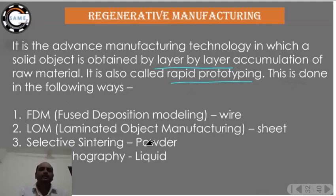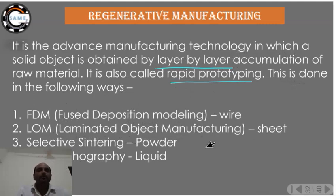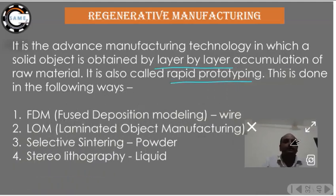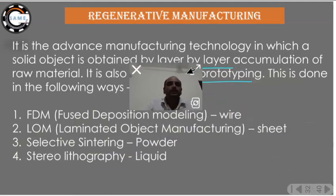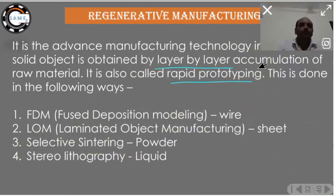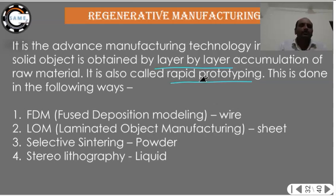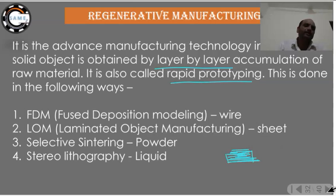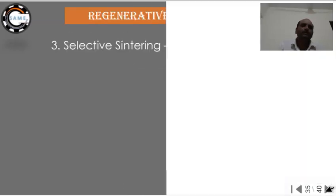There are four types of regenerative manufacturing: FDM — Fused Deposition Modeling; LOM — Laminated Object Manufacturing; Selective Laser Sintering; and Stereolithography. In all these processes, the product is built up layer by layer. This is what regenerative manufacturing is.